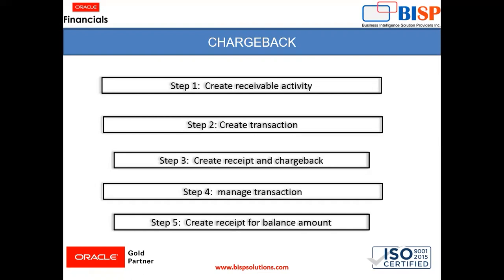Here are the steps we need to follow for chargeback: first, we need to create a receivable activity; second, we will create a transaction of about 2000; then we will book the receipt for 1000 and create a chargeback for the balance 1000. Then we will go to manage transactions and see how the system generates the chargeback transaction automatically. We will also see how to book the receipt for that balance amount. So let's go to the instance and see how we can do this.